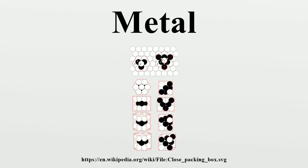Many elements and compounds that are not normally classified as metals become metallic under high pressures. These are formed as metallic allotropes of non-metals.